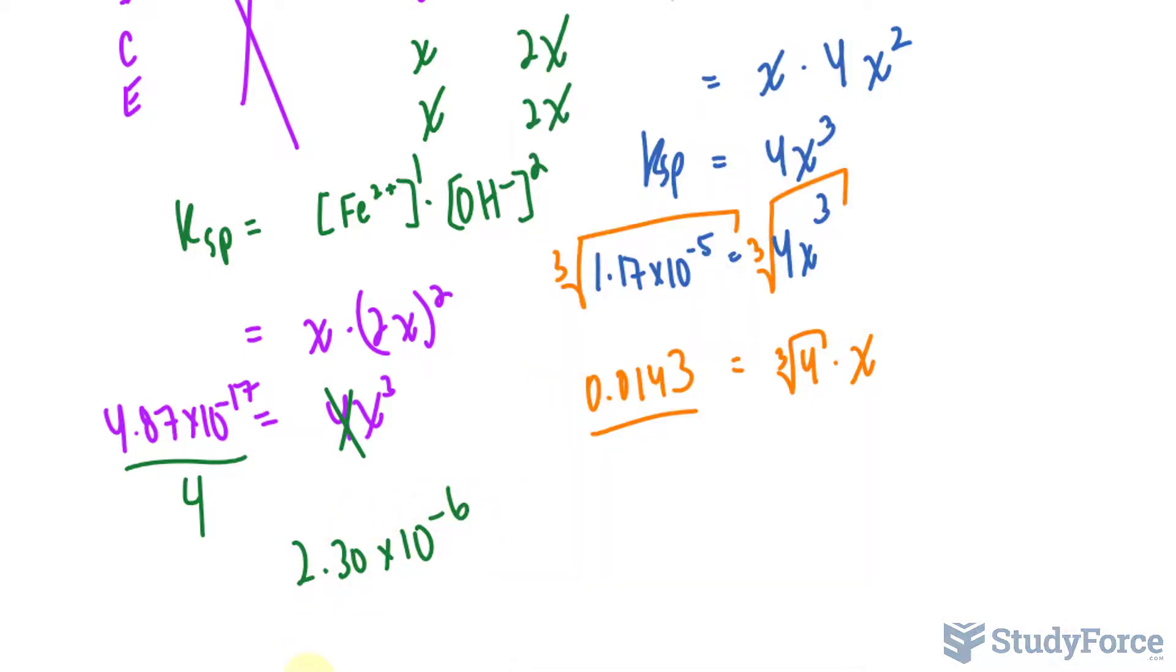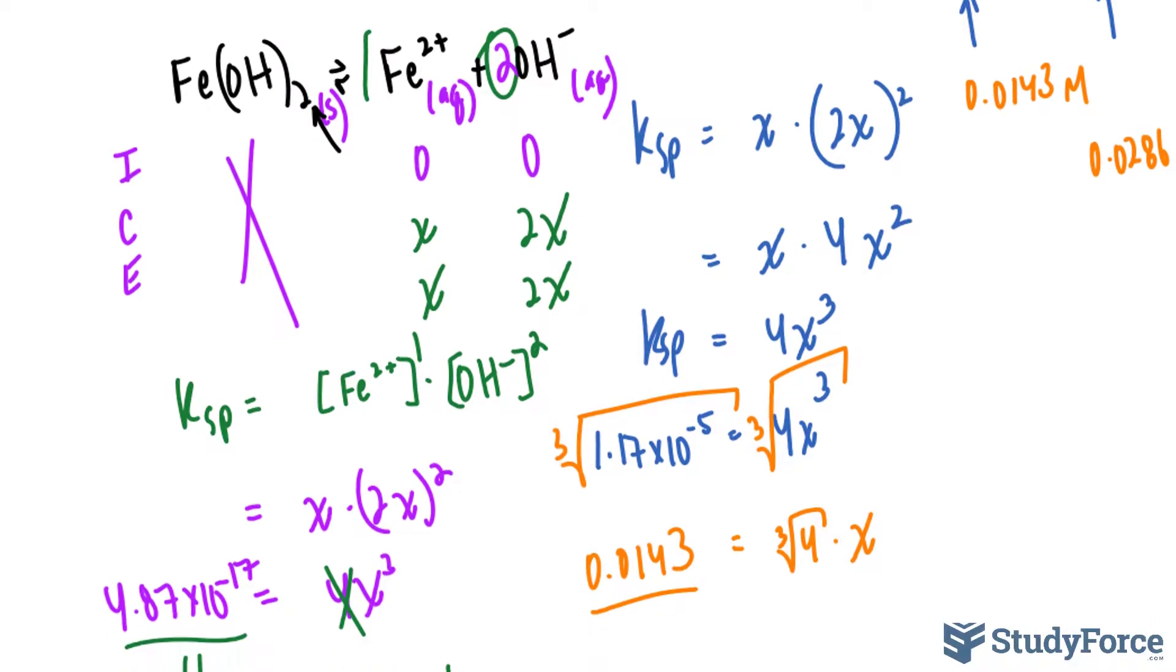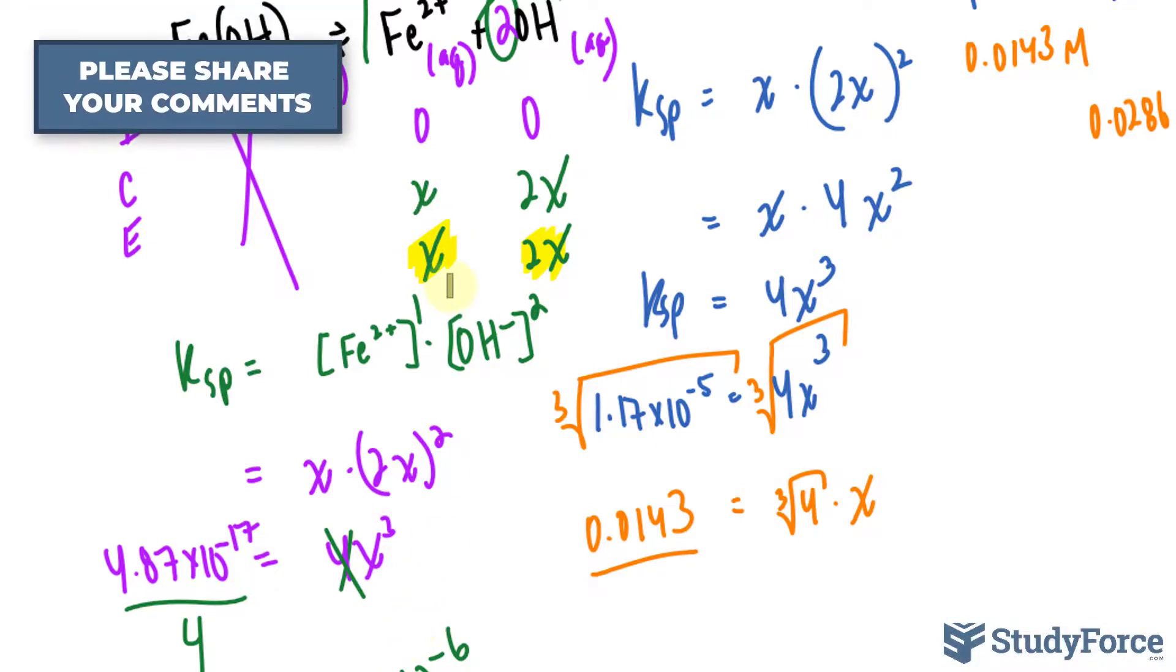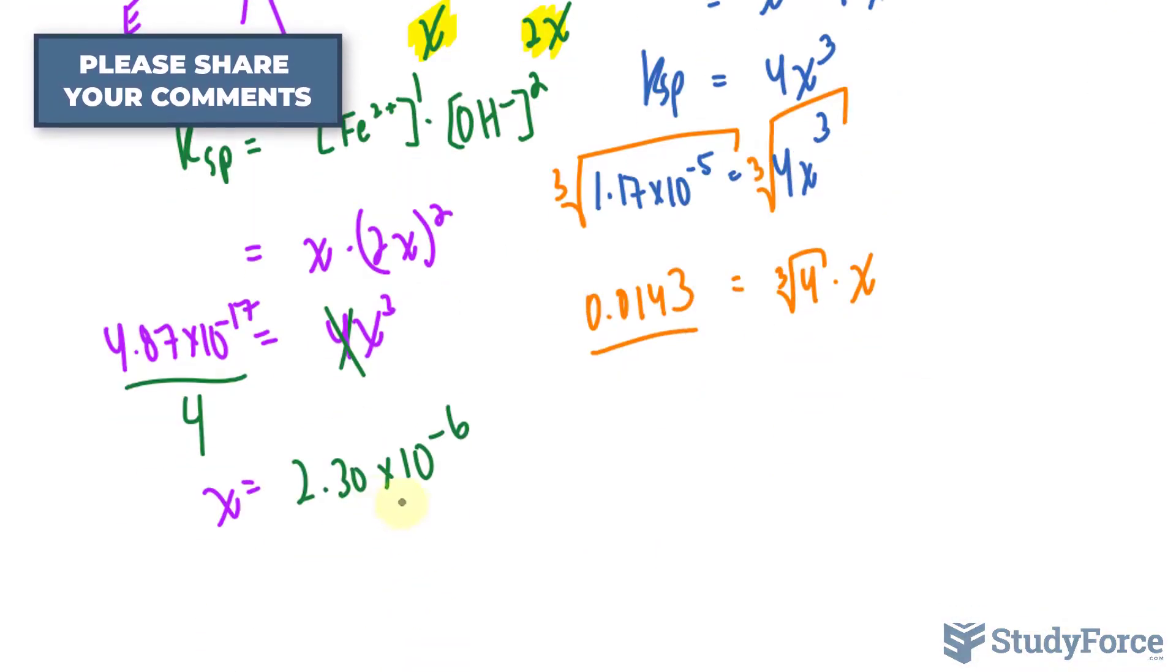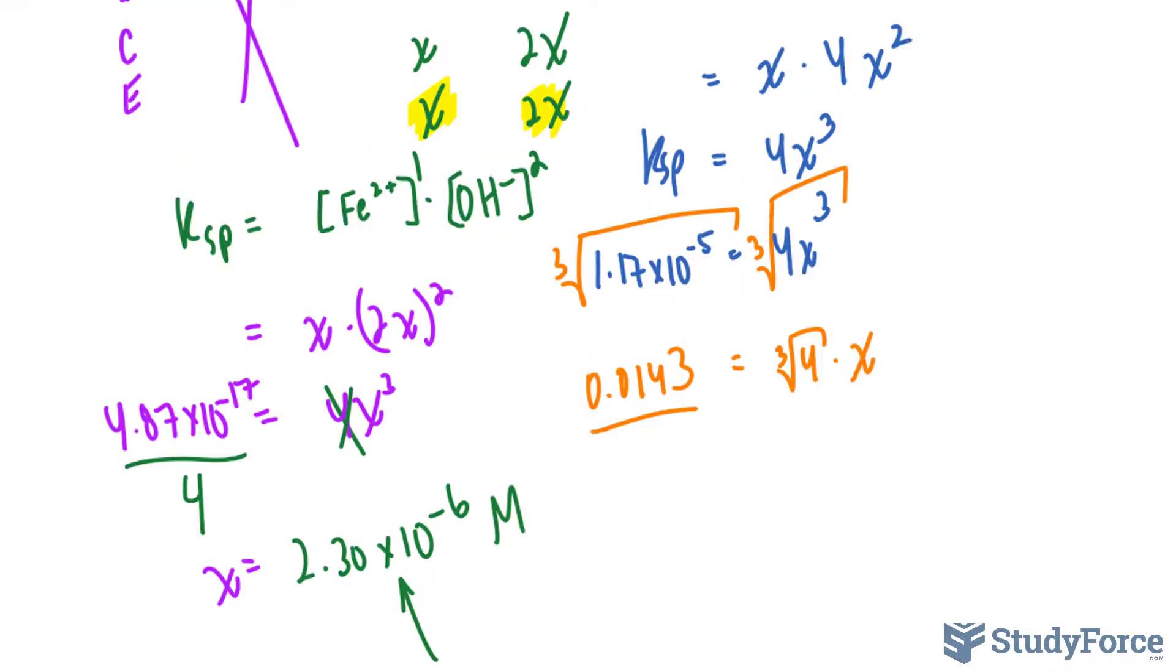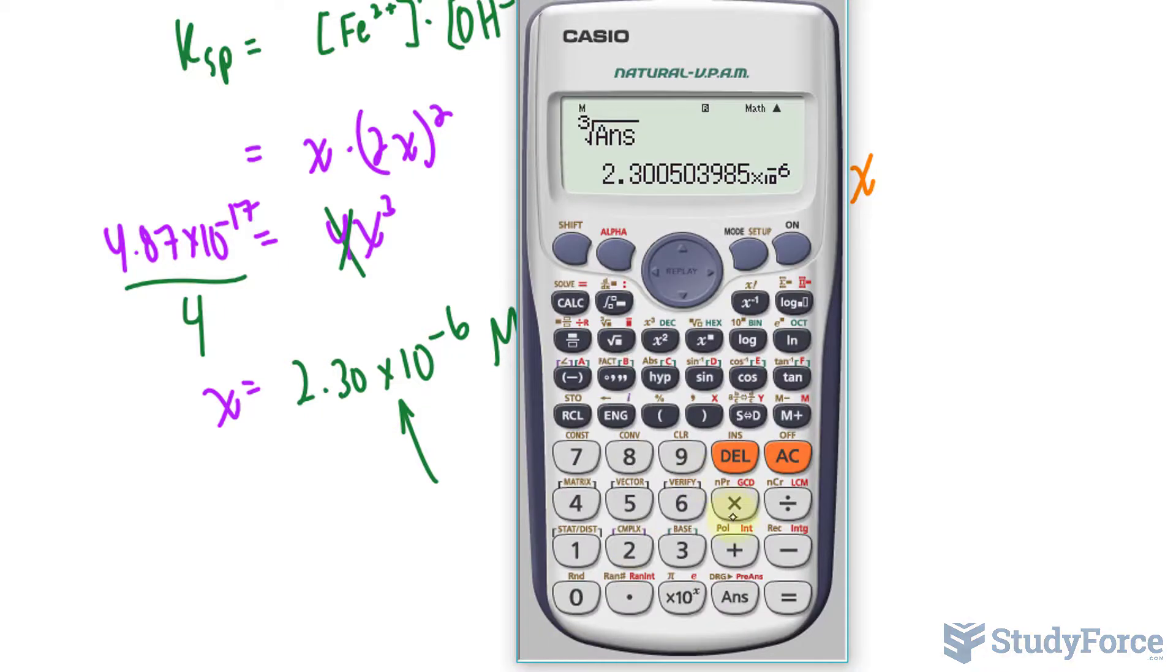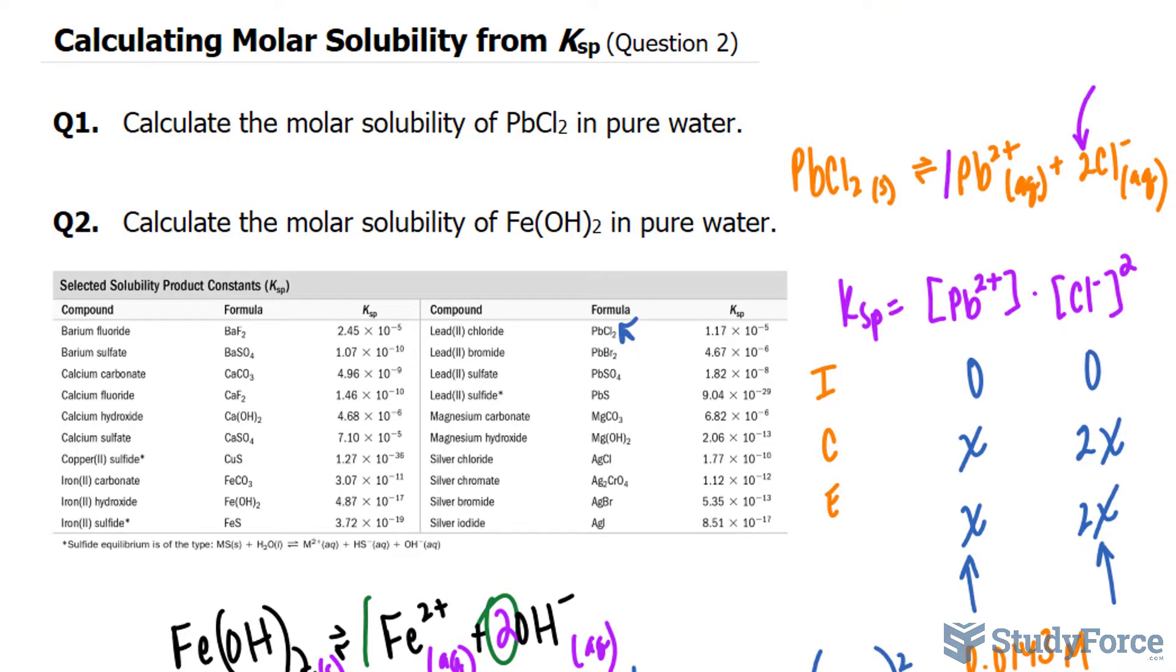Notice that it's correct to three significant figures. So that right there represents X. And we can substitute this number back into where I'm highlighting to find the concentrations of Fe2+ and OH-. So the concentration of Fe2+, since it's simply X, is this, and it'll be molar. And the concentration of OH- will be this number times 2. And there you have it. Another example on how to calculate molar solubility from Ksp.